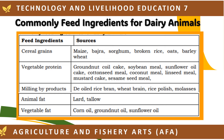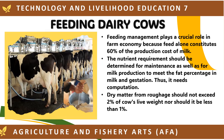Here are commonly used feed ingredients for dairy animals. Feeding management plays a crucial role in farm economy because feed alone constitutes 60% of the production cost of milk. The nutrient requirement should be determined for maintenance, milk production to meet the fat percentage in milk, and gestation. Dry matter from roughage should not exceed 2% of a cow's live weight, nor should it be less than 1%.